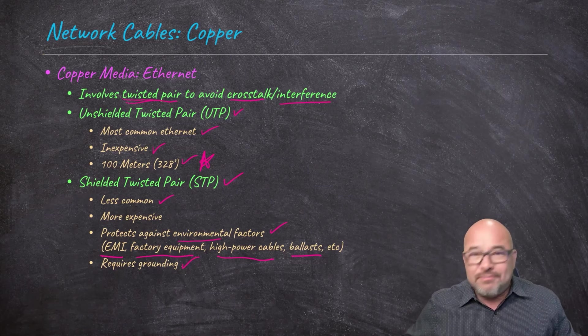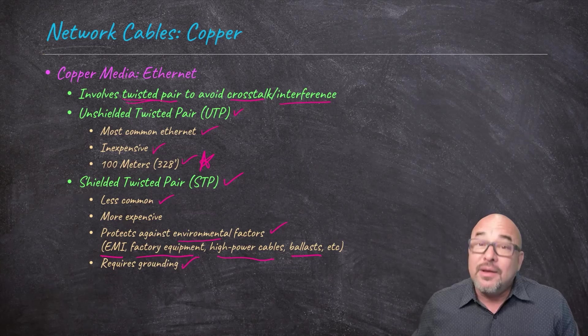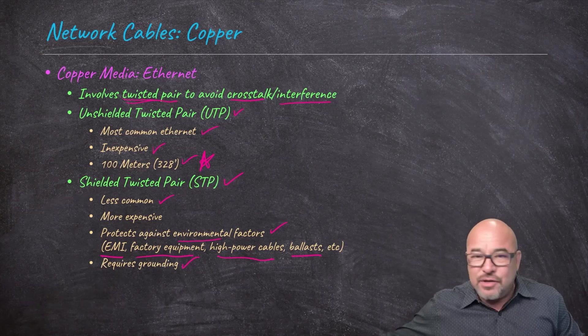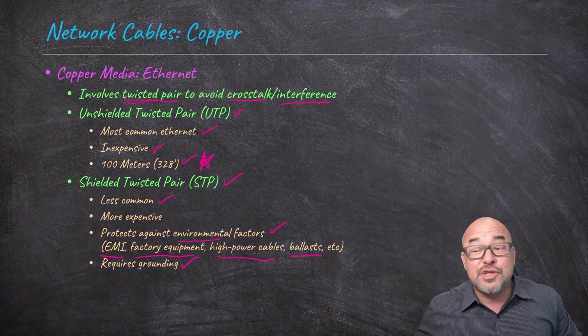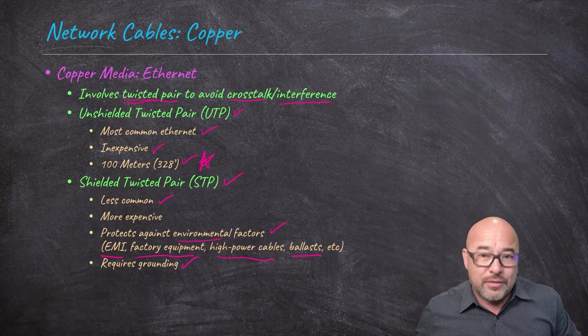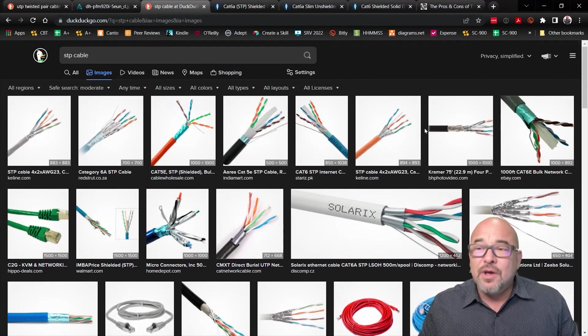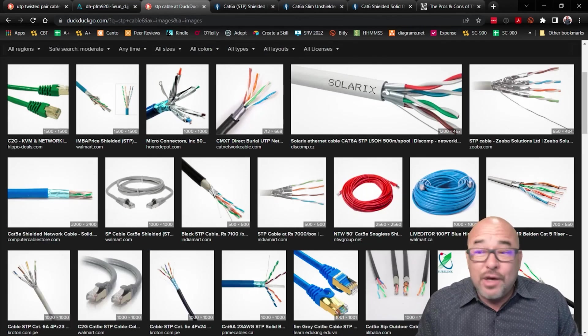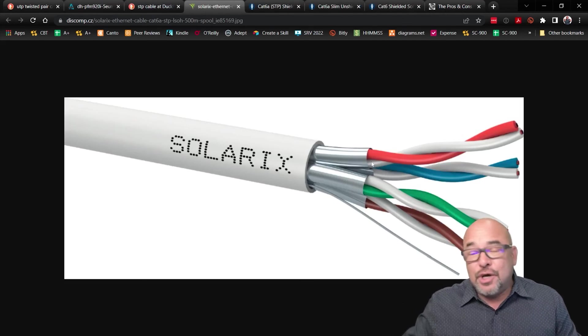And this will protect against environmental factors that could affect the signal. Usually it's going to be electromagnetic interference or EMI. So there might be factory equipment that is operating near that network cable, sending out electromagnetic signals and stuff that would interfere with the data that's trying to transmit across that wire. So we would want to use shielded network cable for that, STP, or you could be running along other high powered cables or lighting ballasts, stuff like that.